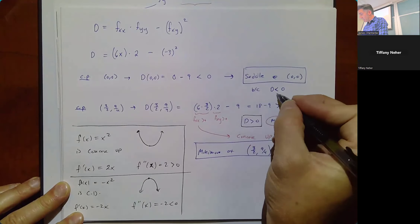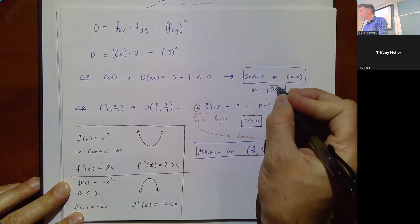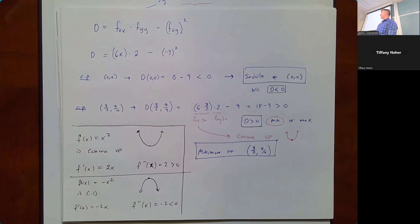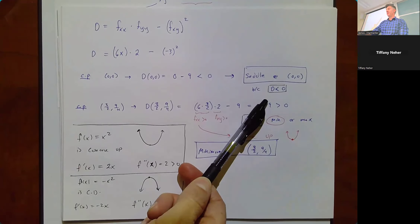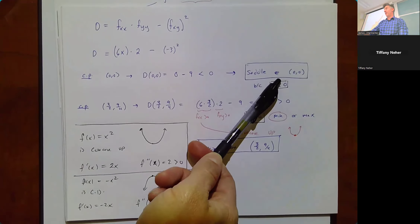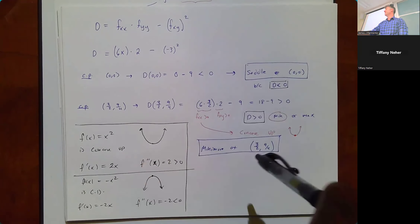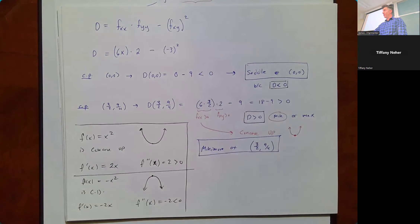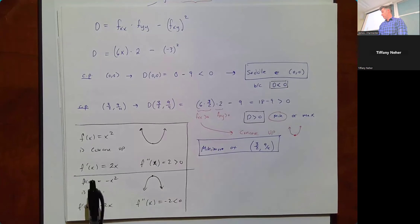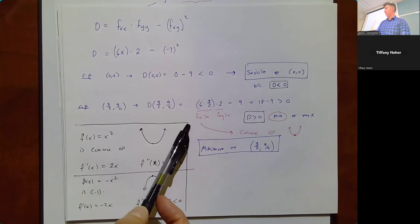To clarify: when D is negative, we have a saddle — not a max. When D is positive, we can have either a minimum or a maximum, and we check the second partial derivative to determine which.